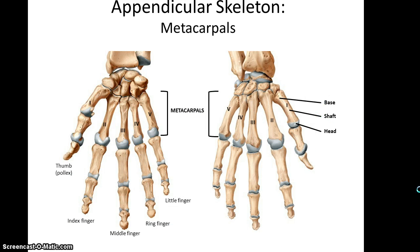From there you get the metacarpals, which are the bones in your palm. They are all called a metacarpal and are numbered one through five, where numbering starts at the thumb. They each have a base at the wrist, a shaft, and then a head that articulates with the phalanges.